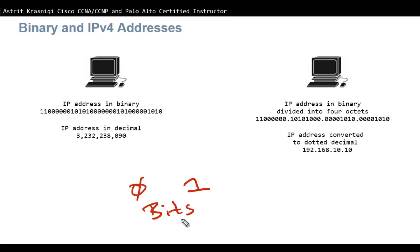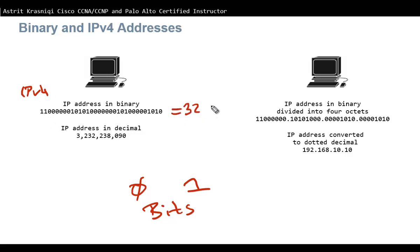As you can see on the screen, this IPv4 address is all zeros and ones — 32 zeros and ones, 32 bits. IPv6 has 128 bits, so that will be even more zeros and ones.